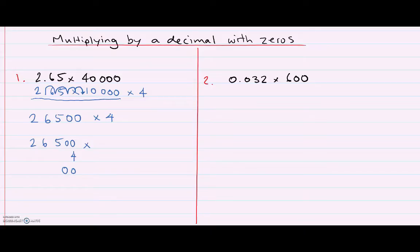4 lots of 5 is 20, so I get another 0 and I carry the 2. 4 lots of 6 is 24, plus 2 more is 26, carry the 2. And 4 lots of 2 is 8, plus 2 more is 10.